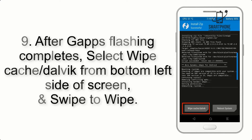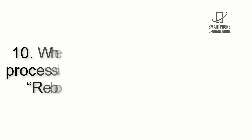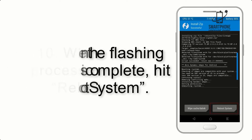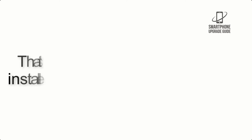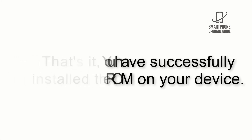Step 9: After GApps flashing completes, select Wipe Cache and Dalvik from the bottom left side of the screen and swipe to wipe. Step 10: When the flashing process is complete, hit Reboot System. That's it — you have successfully installed the ROM on your device.